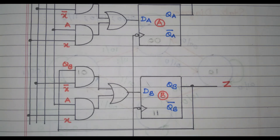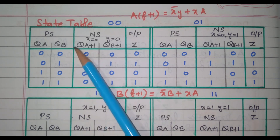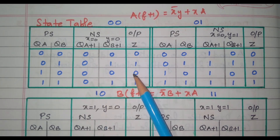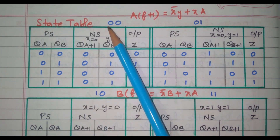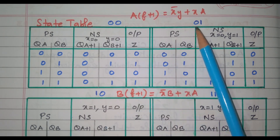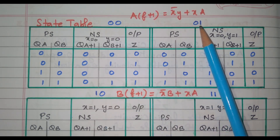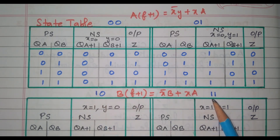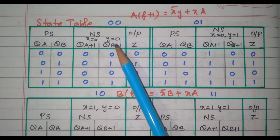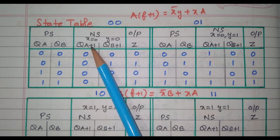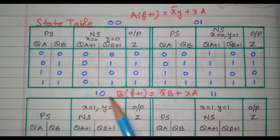Now we will go to the state table. This is the state table: present state, next state, and output. For four combinations — four states: X=0,Y=0; X=0,Y=1; X=1,Y=0; X=1,Y=1. The present state has QA and QB giving four combinations: 00, 01, 10, 11. Because there are two inputs X and Y, we have four input combinations. So totally 16 combinations are available.